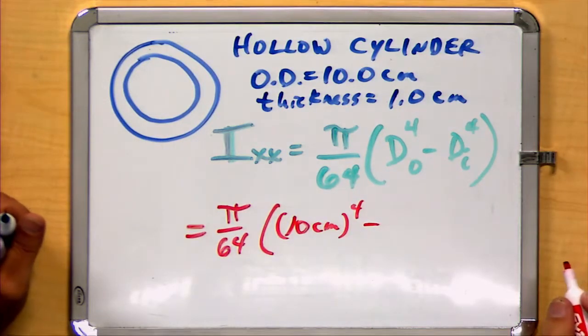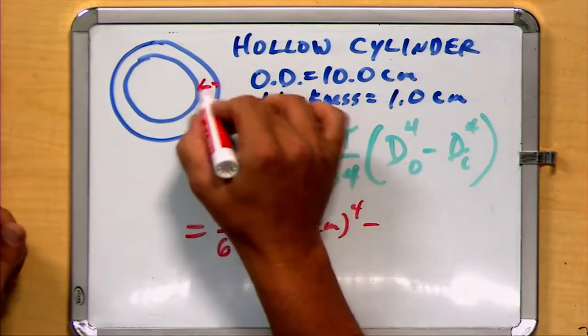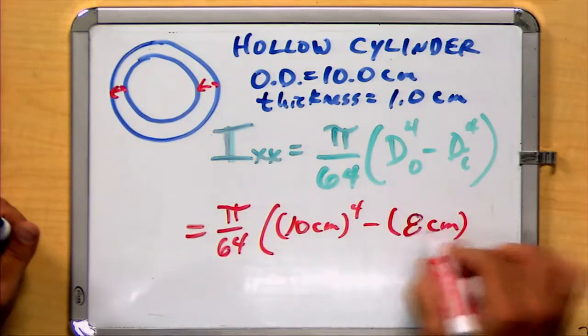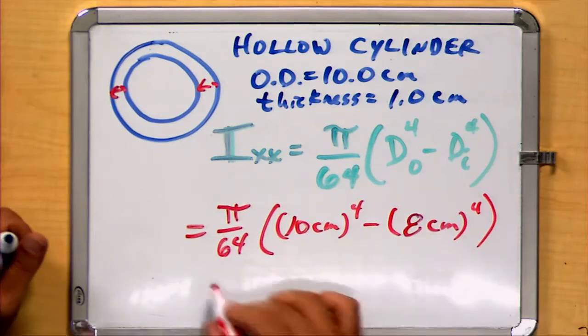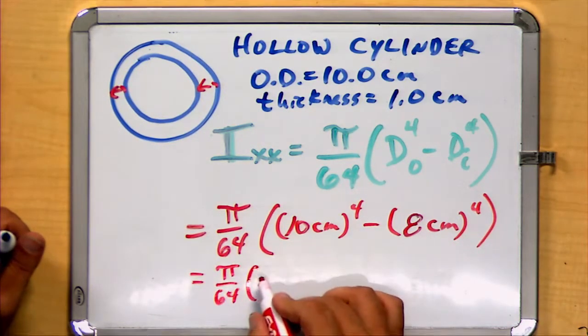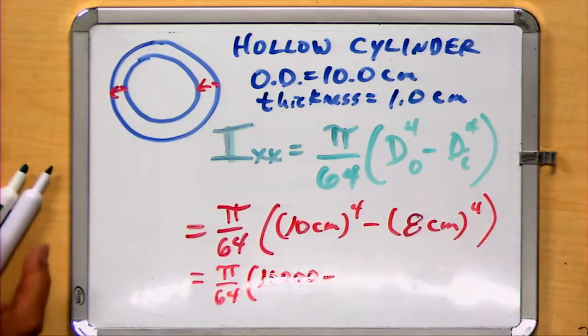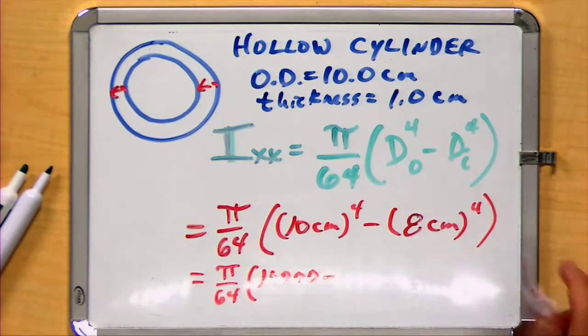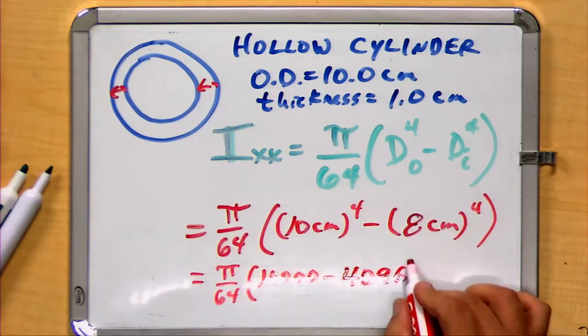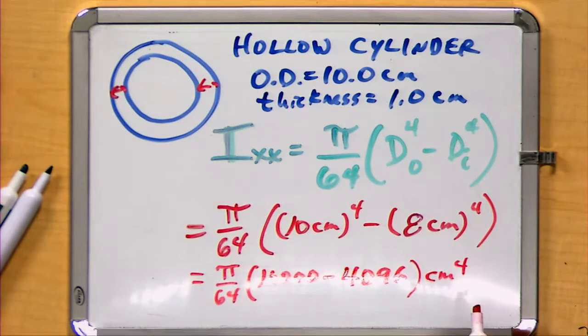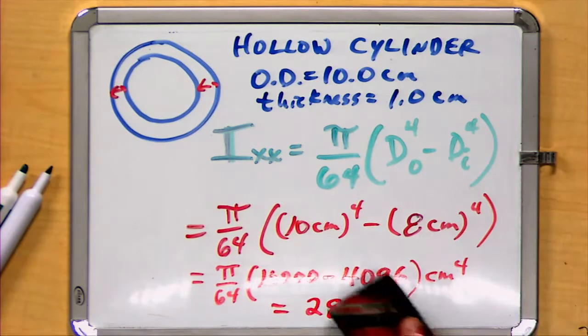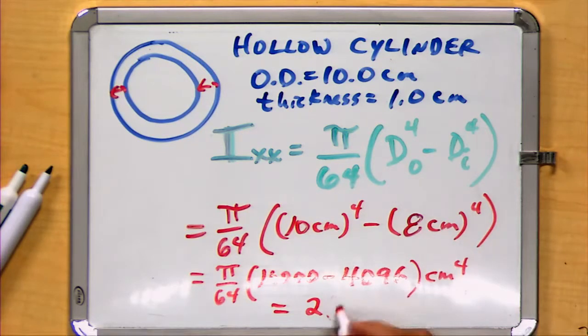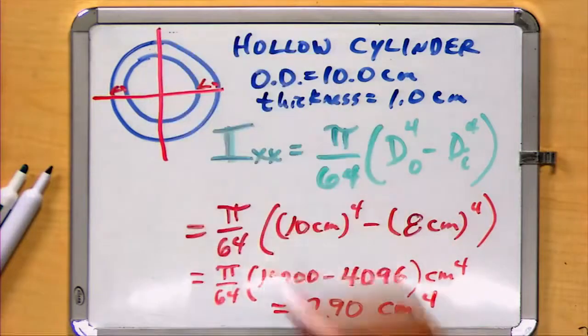Well, that means our inner diameter is going to be 8 centimeters to the fourth power. Pi over 64 times a value of 10,000. And now we also need to have a value for 8 to the fourth power, which is 4,096. Notice both of these together are going to be centimeters to the fourth. And so our final value here is going to be 289.8, or using the significant digits we have, 290 centimeters to the fourth. And again, that applies to both Ixx and Iyy, given the symmetry of the cylinder.